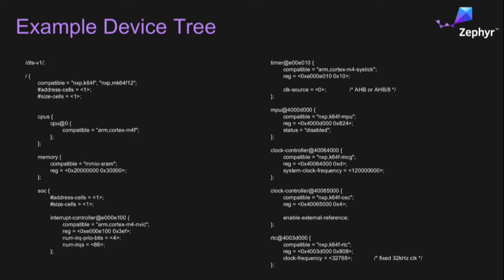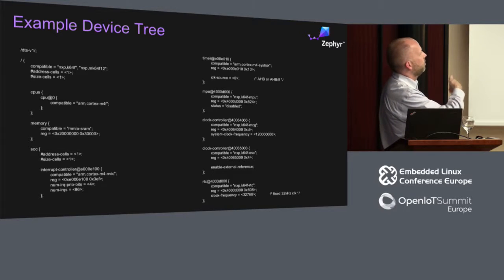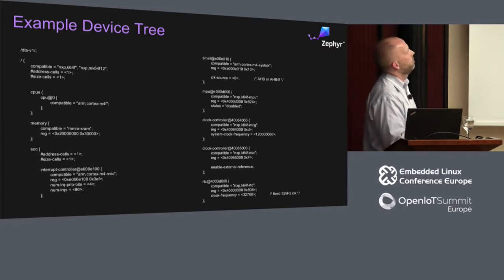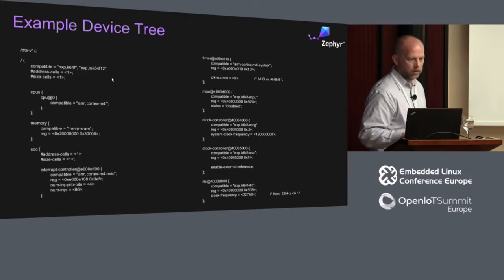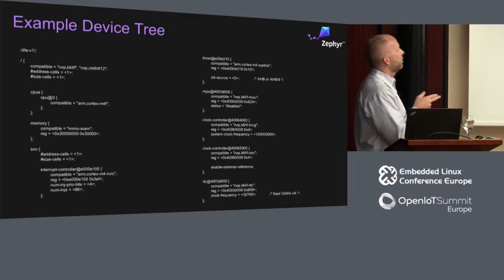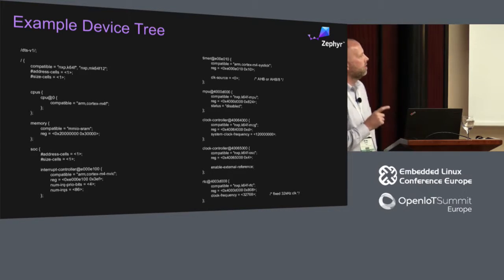I took the Freedom board and created a device tree file. If you're familiar with device tree or looked at it in the Linux kernel, you'll see some very similar things. The first thing is we're going to have a board compatible, and you generally have more than one compatible name going from least specific to more specific. This is a K64F and the board is the MK64F12. It has one M4F processor. It has some SRAM at 0x20000000 — I think it's 192K. And then you have the actual SOC structure which contains the device nodes themselves.